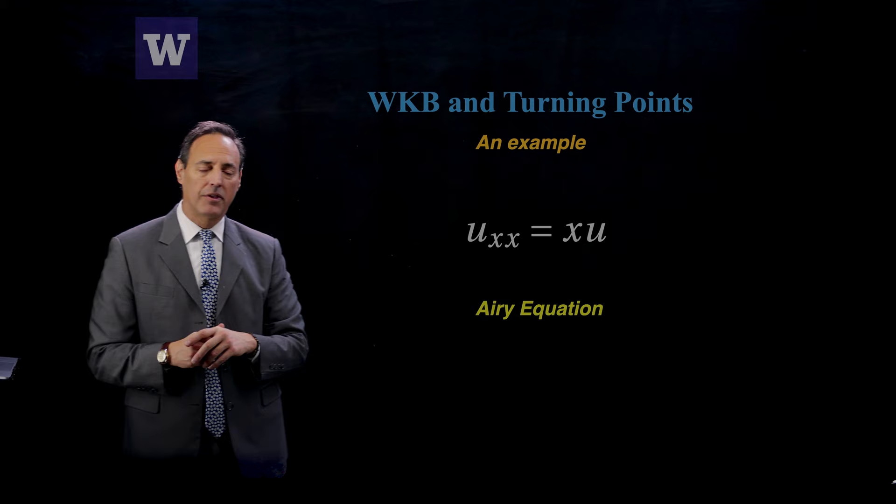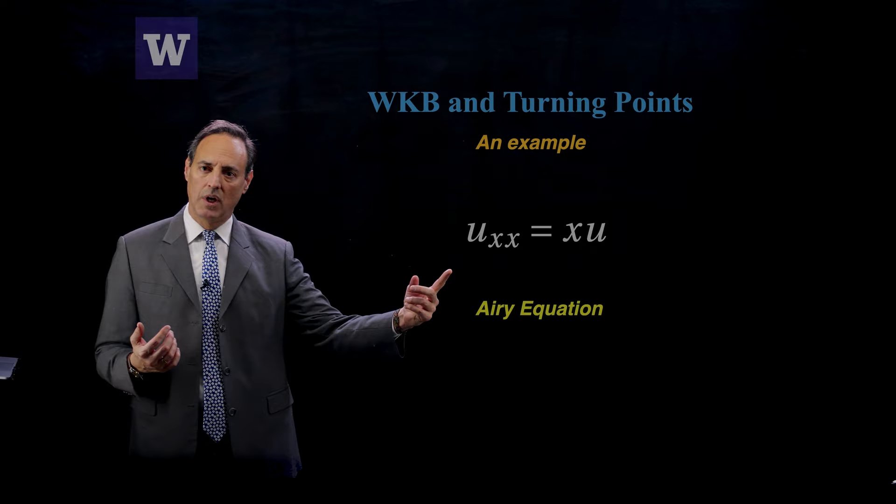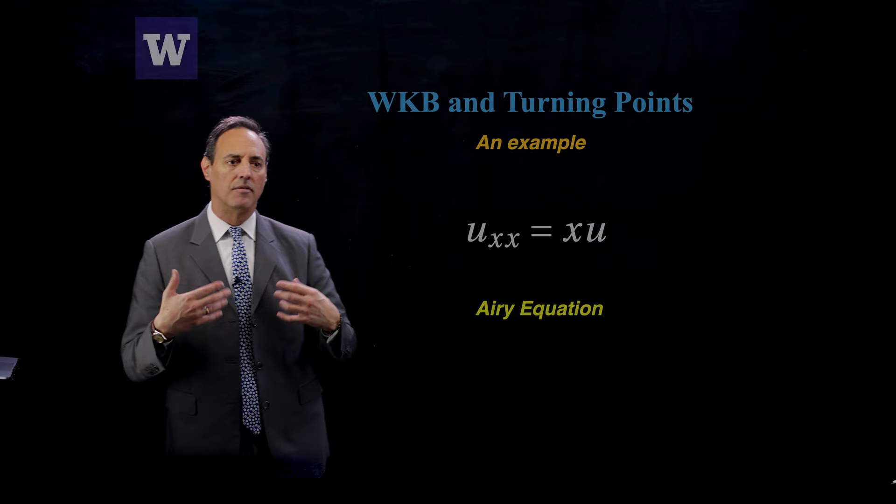I want to remind people that WKB theory is really about solving these problems that are singular in nature with a high amplitude. I'm going to consider this example for a moment which is uxx equals xu which is called the Airy equation. And what I really want to understand is the asymptotic behavior of the Airy equation.